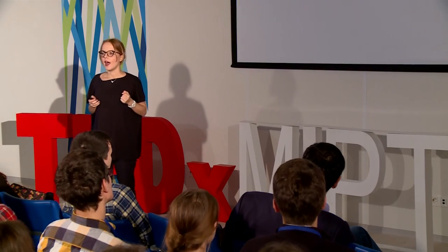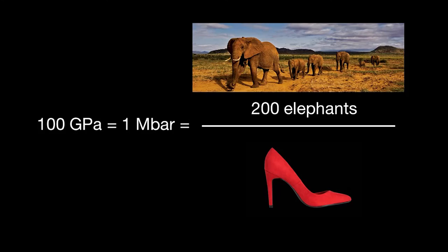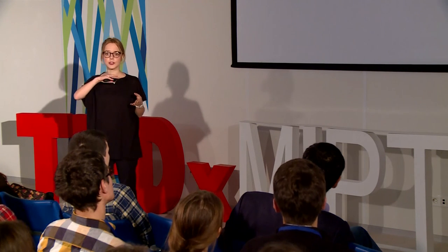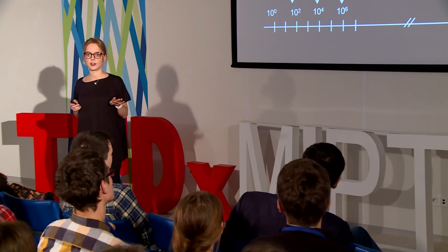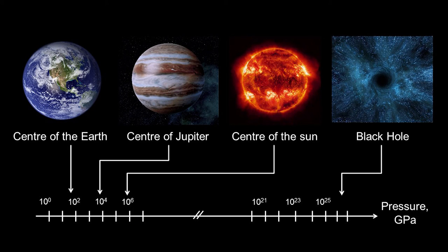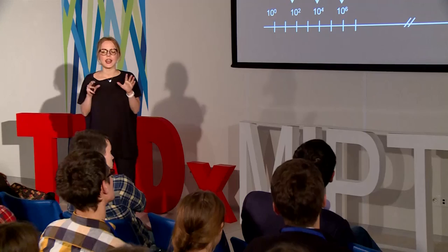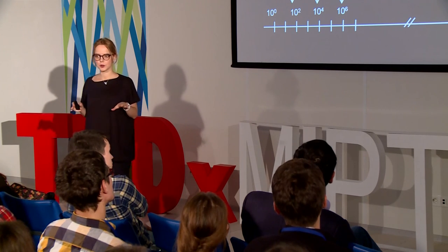What does this number mean? If we take 200 elephants and put them on the high heel of a shoe, the pressure that heel exerts on the surface would be about 100 GPa. These pressures are real in the universe — the most part of matter in the universe exists under high pressure, even higher than 200 elephants on one high heel. And chemistry under these conditions is absolutely different.